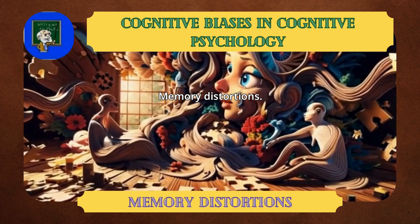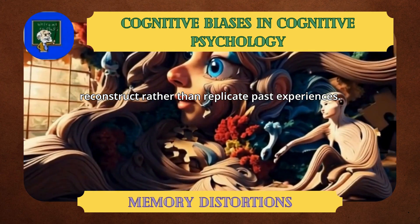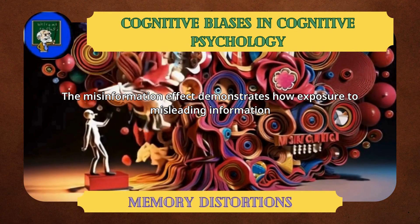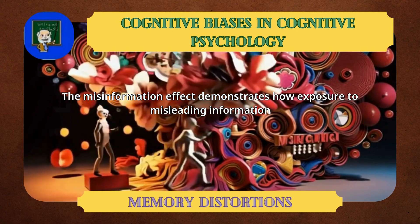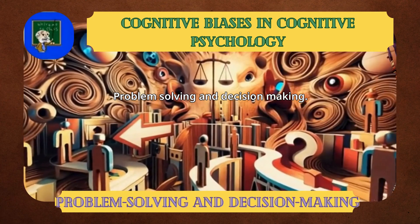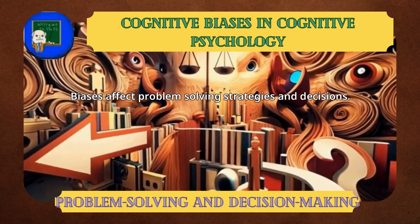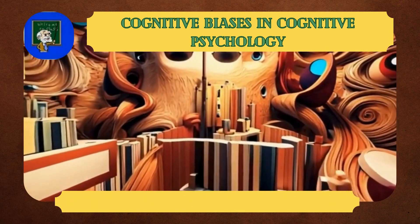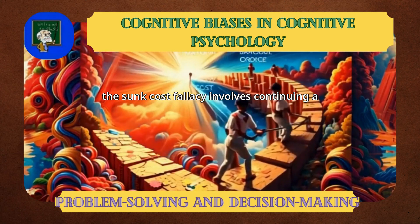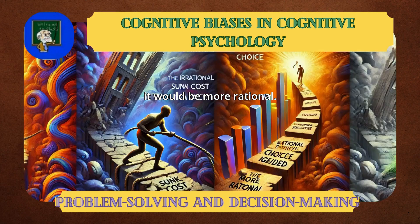Memory distortions reveal how cognitive processes reconstruct rather than replicate past experiences. The Misinformation Effect demonstrates how exposure to misleading information after an event can alter memory of the event. Problem-solving and decision-making: biases affect problem-solving strategies and decisions. For instance, the sunk cost fallacy involves continuing a course of action because of prior investments, even when abandoning it would be more rational.